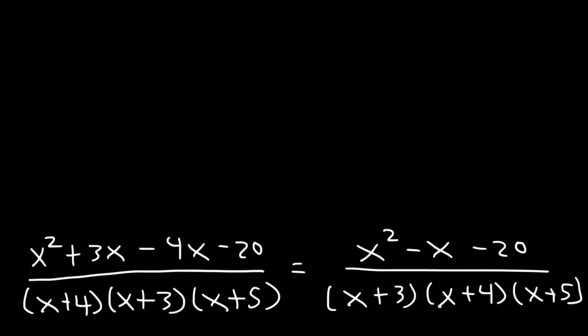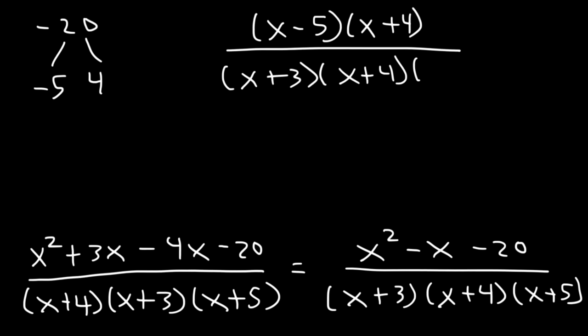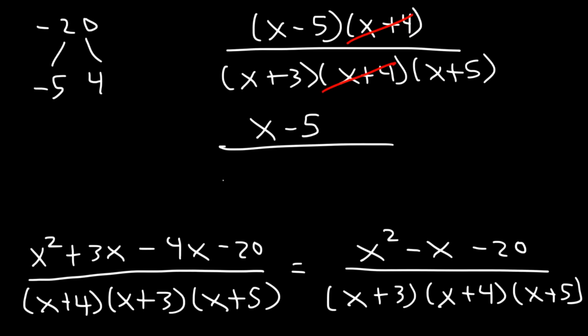Now can we factor x squared minus x minus 20? What two numbers multiply to negative 20 but add to negative 1? That's negative 5 and positive 4, since negative 5 plus 4 is negative 1 and they multiply to negative 20. So we can factor as x minus 5 times x plus 4. Notice that x plus 4 cancels with the denominator.